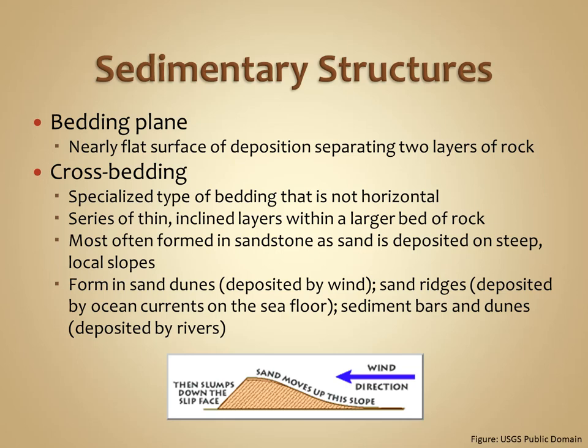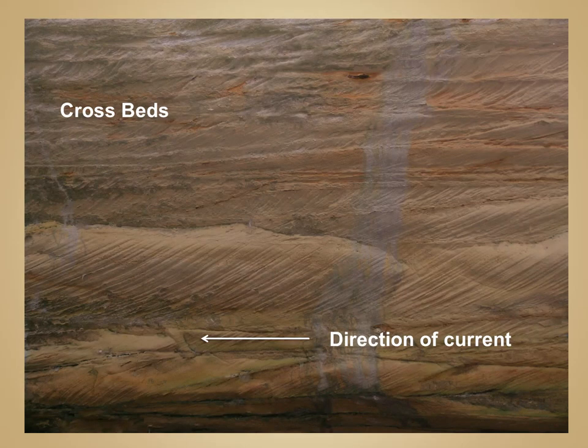A special type of bedding that is not horizontal is known as crossbedding. Crossbedding forms as sediment is being transported by wind or water and is deposited on steep down slopes of dunes or sediment bars. These series of inclined layers build outwards in the down-current direction. In this image, you can see the crossbeds are inclined to the left, indicating that current direction was from right to left in the photograph.